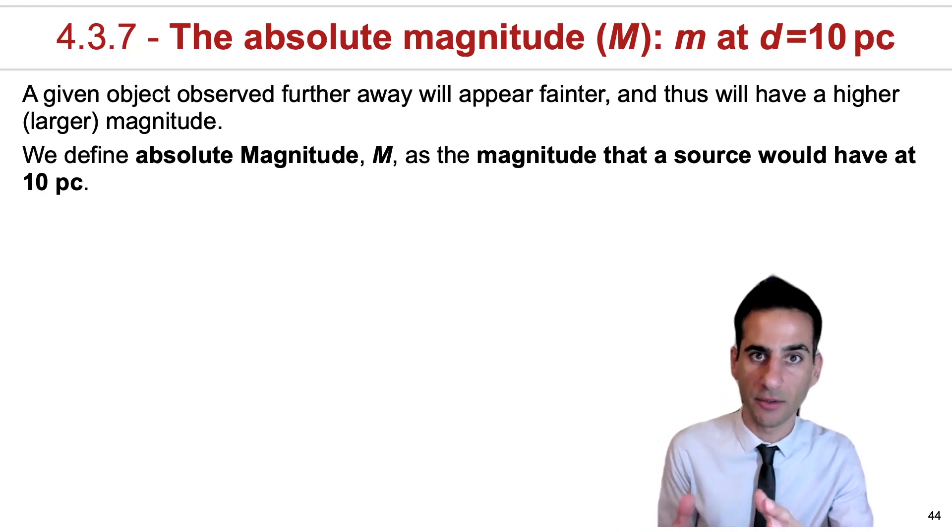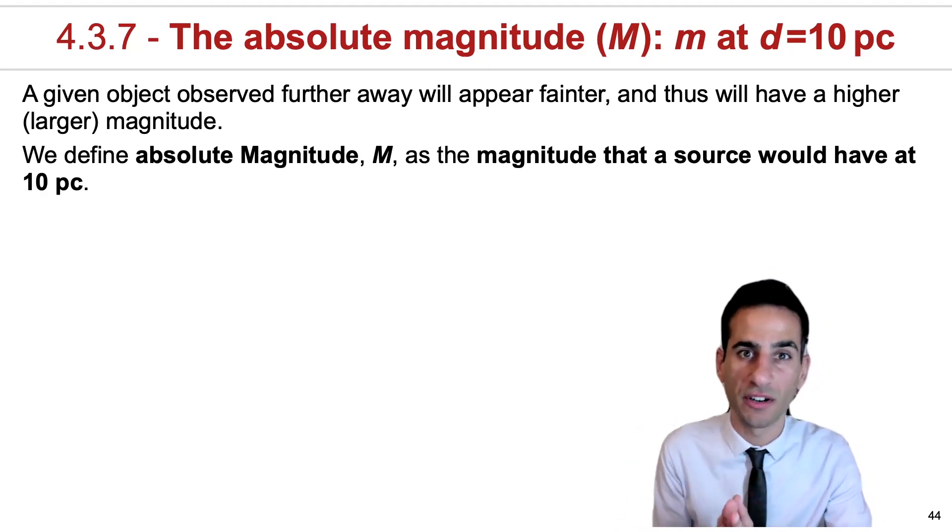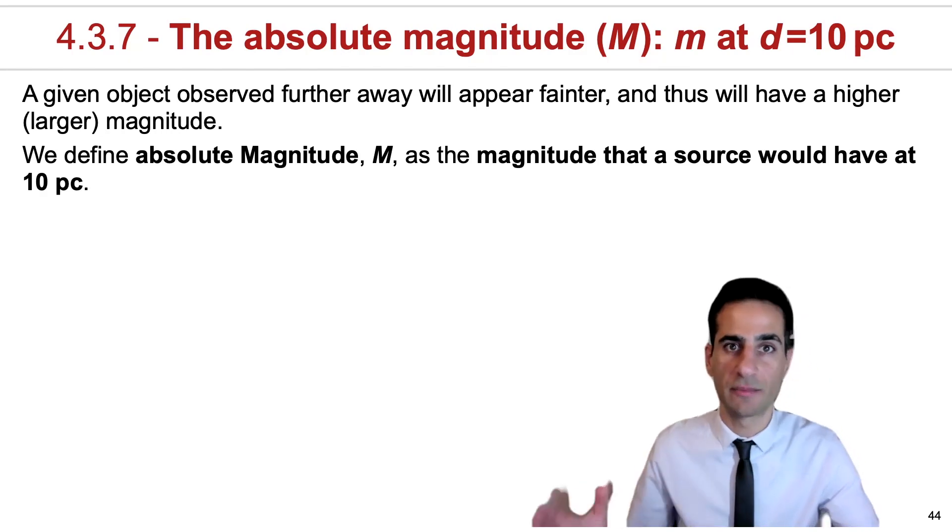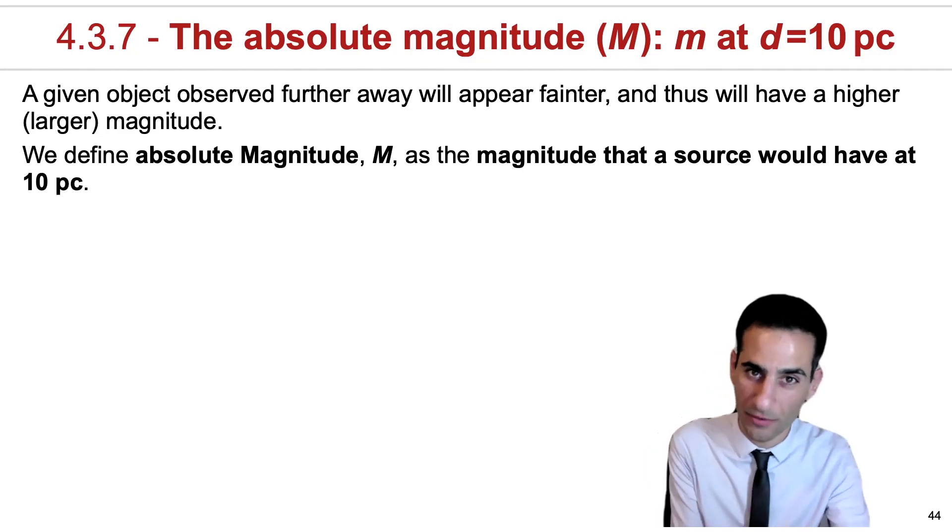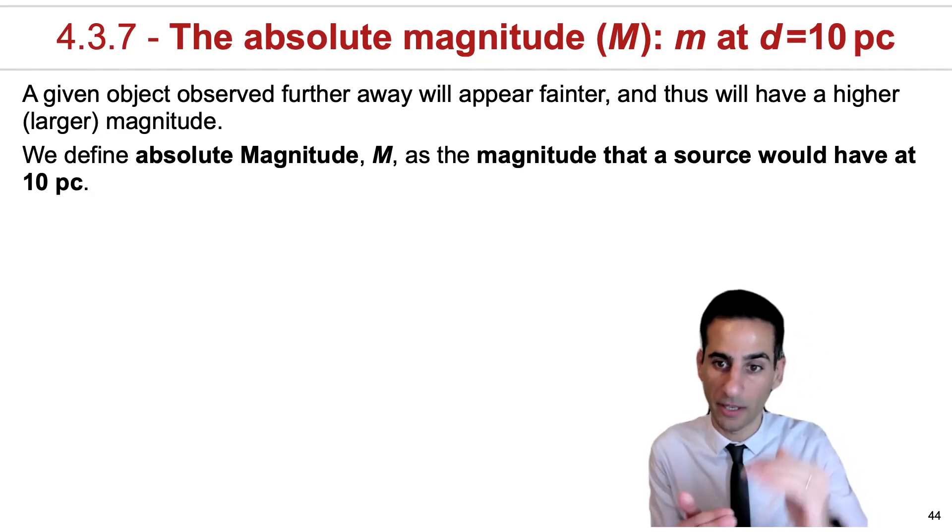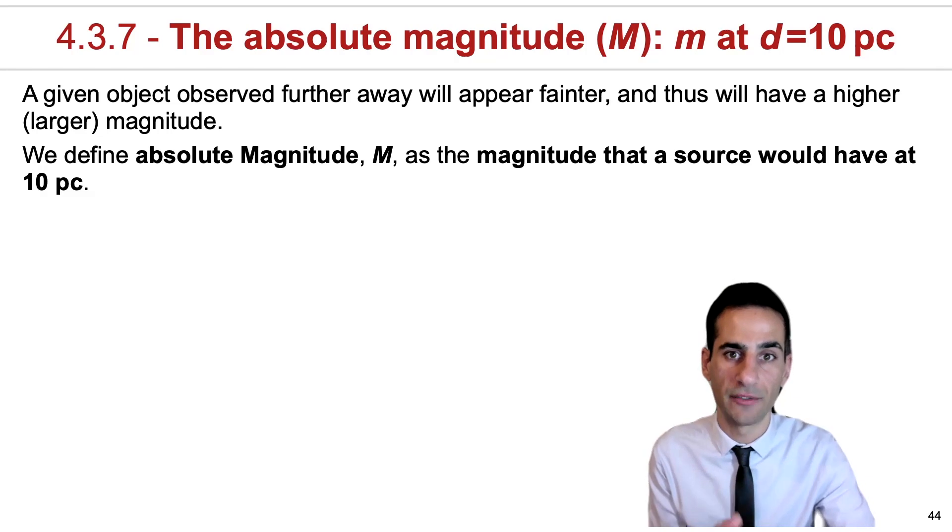Up to now, we've been talking about magnitude small m, which are essentially what we would call apparent magnitudes. Now, these apparent magnitudes will depend on the distance. If the same object is further away from you, it will look fainter, so the magnitude is going to be higher, and if it is closer, it will appear brighter, so the magnitude will be lower.